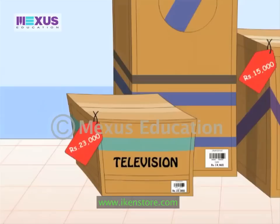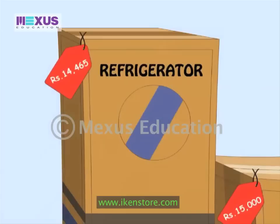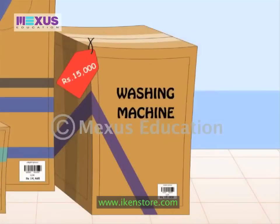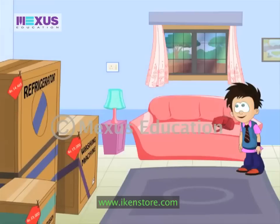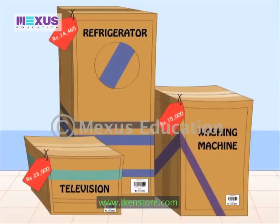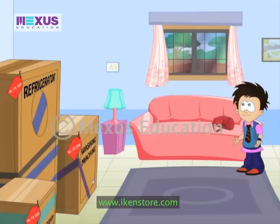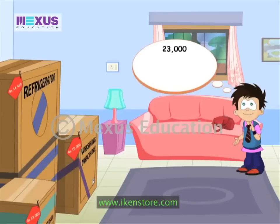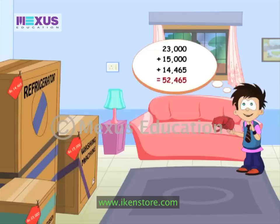Hey, wow! A new television. Look at all this. There's a fridge and a washing machine too. I wonder how much it all cost. Hey, look! The price tags are on the equipment. Let me add them up. How much is 23,000 plus 15,000 plus 14,465? It's 52,465, I think.